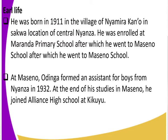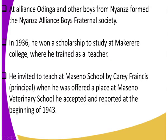It is at Alliance High School where he likely met Gideon and other alumni. At Alliance, Oginga Odinga and other boys from Nyanza formed the Nyanza Alliance Boys Fraternity Society. In the year 1936, he won a scholarship to study at Makerere College in Uganda, where he also trained as a teacher.